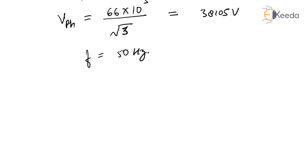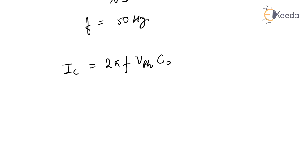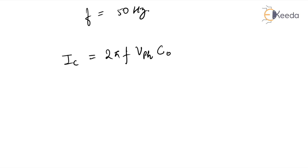The charging current IC equals 2πF·VPH·C0, where C0 is the capacitance per phase. First we need to find the capacitance per phase, which is the core-to-neutral capacitance.